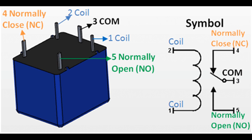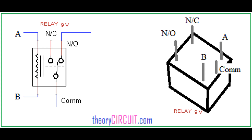Fault protection in relays involves the capability to detect abnormal conditions or faults in an electrical circuit and take appropriate actions to mitigate potential damage or hazards. Relays with fault protection features are crucial components in systems where the reliable and safe operation of electrical equipment is essential. Fault protection relays are designed to monitor specific electrical parameters such as current, voltage, temperature, or frequency within the circuit they are protecting. Deviations from normal operating conditions can indicate a fault.